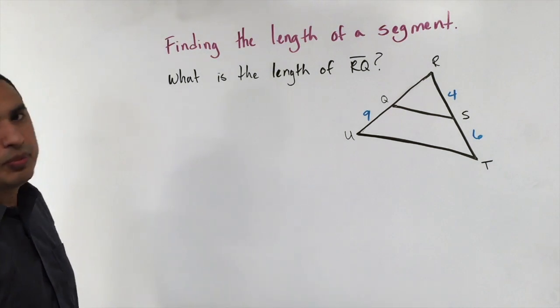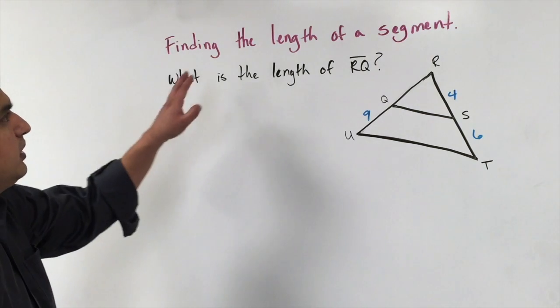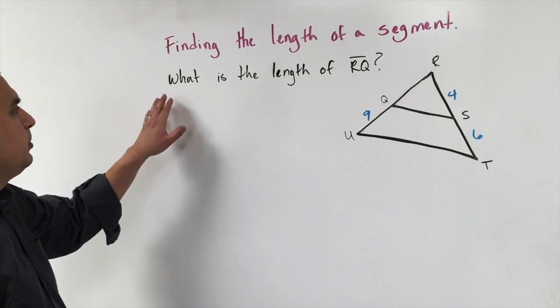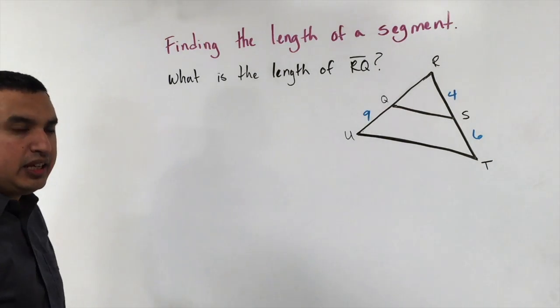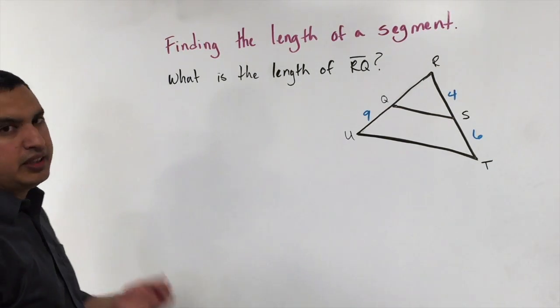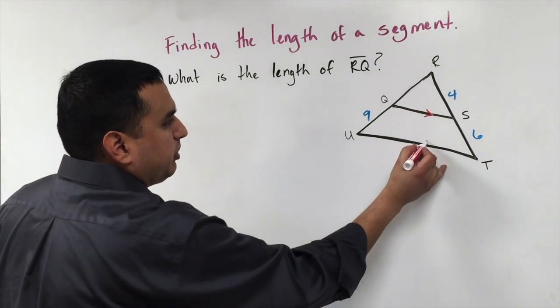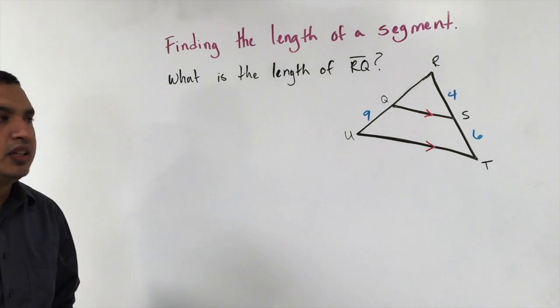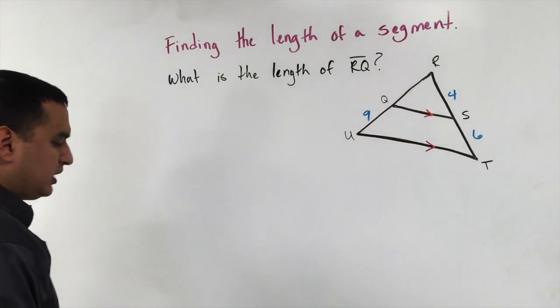We're going to start looking at what's called the Proportionality Theorem. To do that, we're going to look at this example that says finding the length of a segment. We want to find the length of this segment RQ. Now, the Proportionality Theorem hinges on the fact that this QS segment has to be parallel to this segment UT. If this segment is parallel to one of these legs, one of these sides, then I can set up a proportion like this.